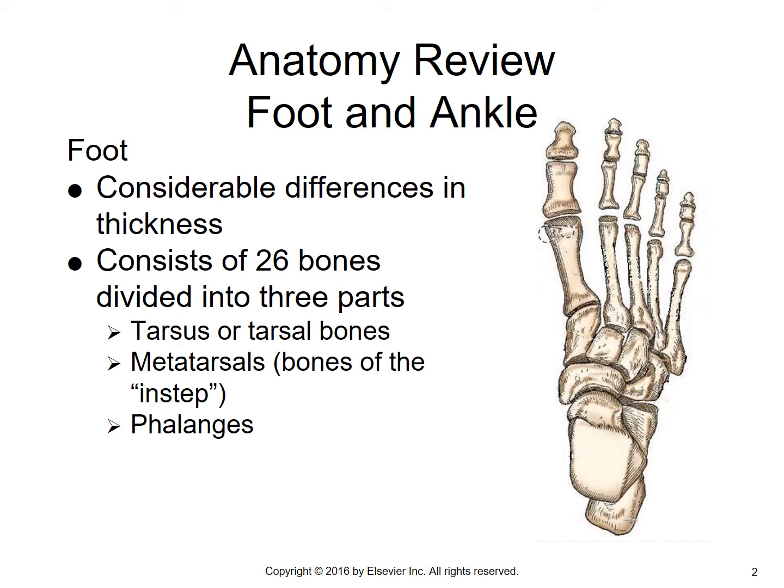As we talk about the foot, we need to remember that we learned the bones of the hand. There were three sets of bones in your hand: phalanges, metacarpals, and carpals. In the foot, we've also got three sets of bones. There are 26 bones in total, and the three groups are the phalanges, the metatarsals, and the tarsals.